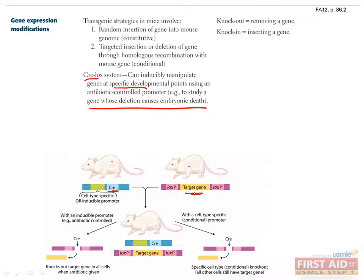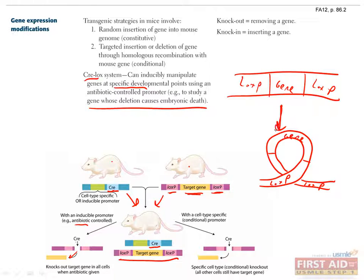In a second mouse, you have your gene of interest with a sequence called a LOXP site on either side of it. When you mate these two mice together, some offspring will receive both the Cre construct and the LOXP construct. When you add your drug and Cre is expressed, it produces an enzyme which causes recombination between LOXP sites. This makes them form a loop, and anything that was between them gets removed.